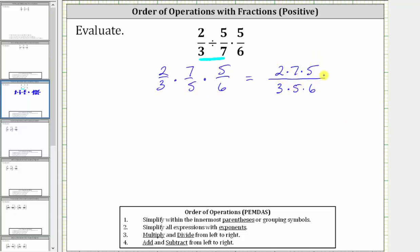And now let's simplify out the common factors other than one between the numerator and denominator. Notice here we have a common factor of five. Five divided by five simplifies to one,